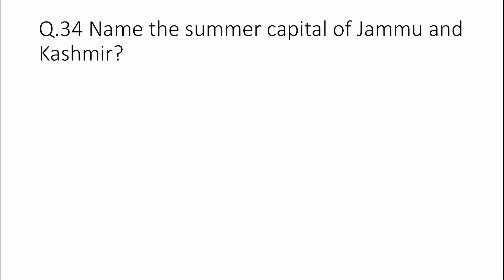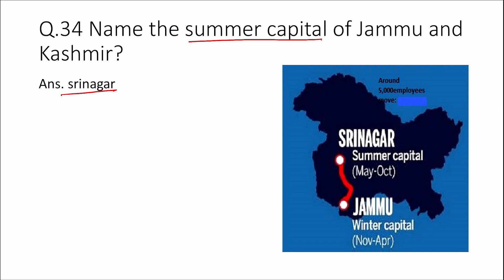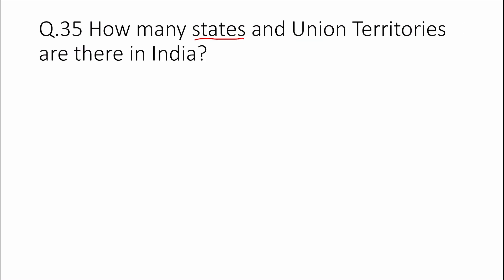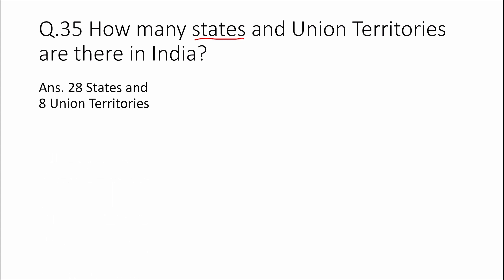Question 34: Name the summer capital of Jammu and Kashmir. Answer: The summer capital is Srinagar and the winter capital is Jammu. Question 35: How many states and union territories are there in India? Answer: 28 states and 8 union territories.